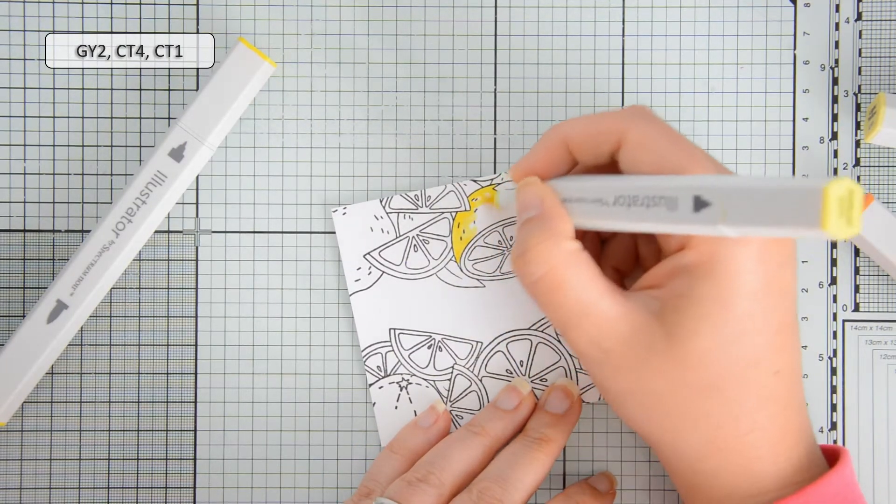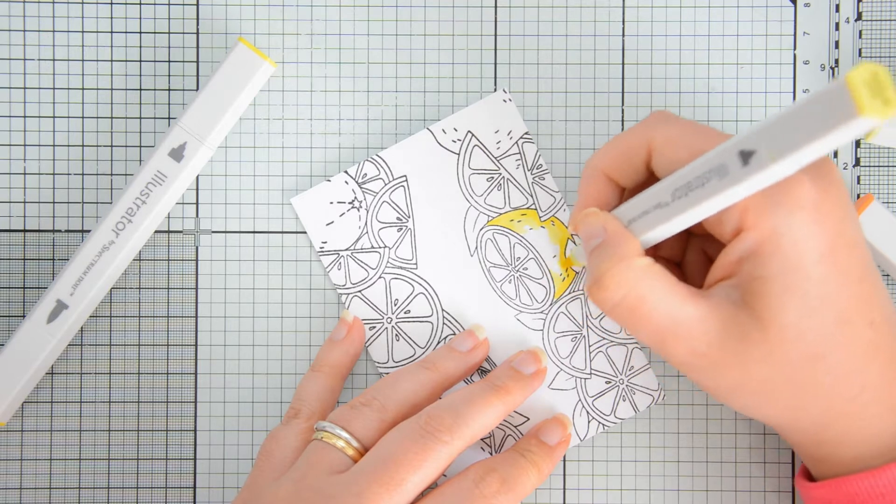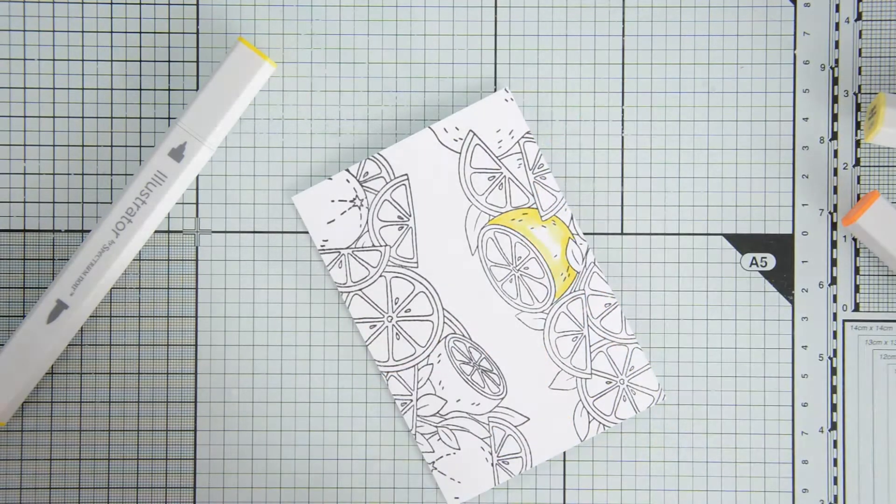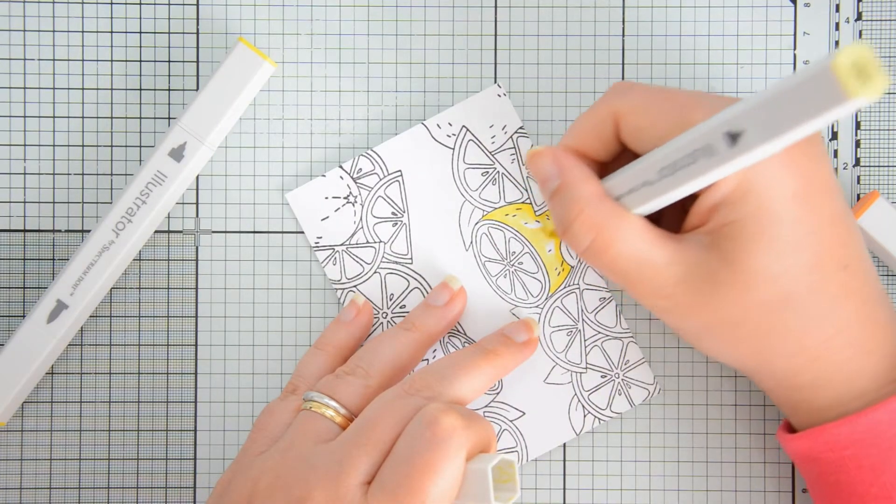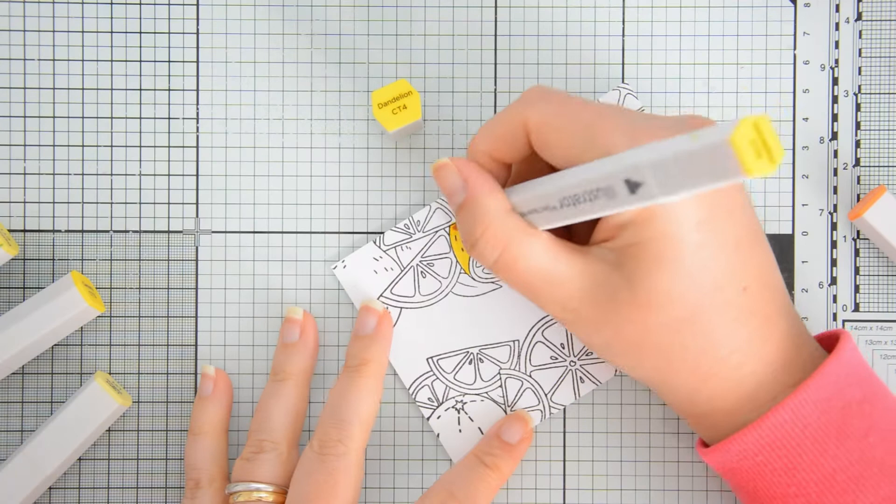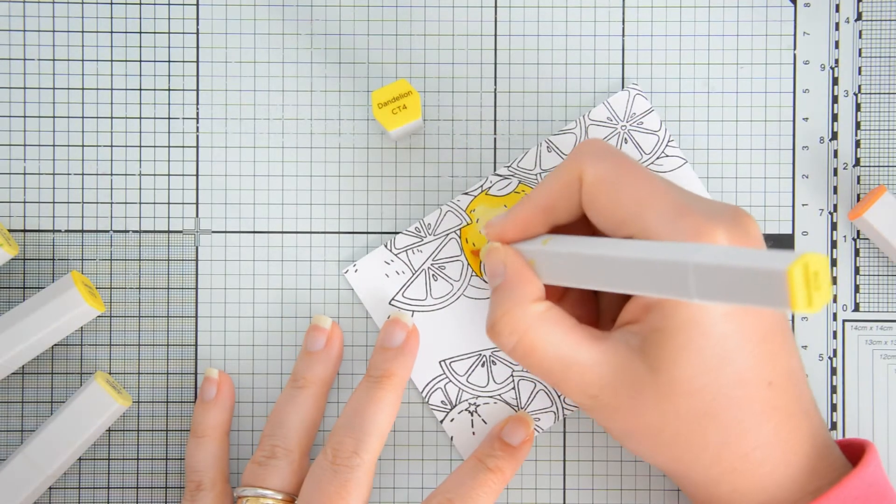I colored the citruses as if these were lemons, oranges and grapefruits, and then I used some greens for the leaves. The marker numbers are listed on screen as well as in the blog post that you will find listed in the description box down below.